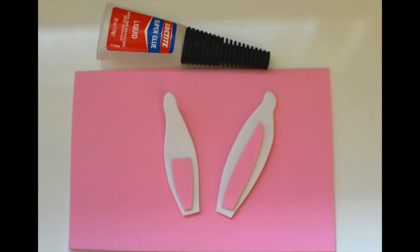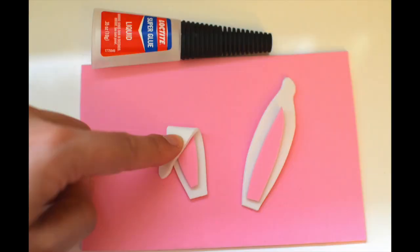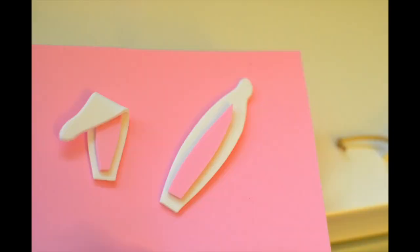So the folded ear only requires half of the pink strip and then the longer ear will take the whole strip. You're going to super glue the pink parts down and then you're going to super glue the folded ear down.